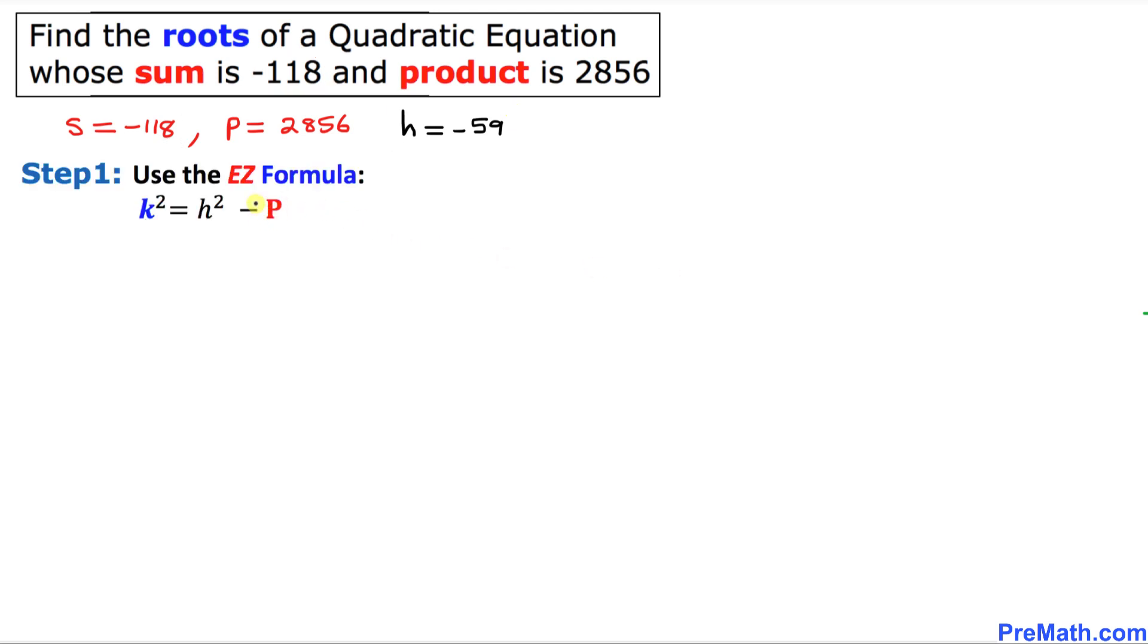And now we are going to perform a couple of steps. In the very first step we are going to use this easy formula which is k squared equal to h square minus P.